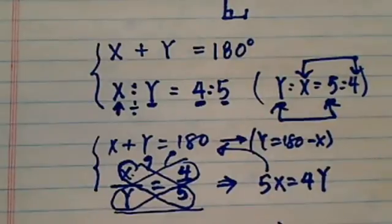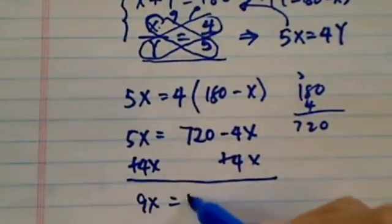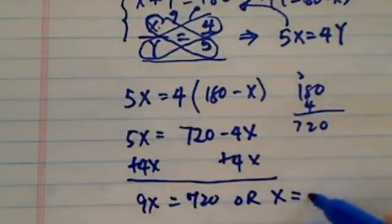Add 4x on both sides. You can see 9x is equal to 720, or x, the smaller one, is equal to 80 degrees.